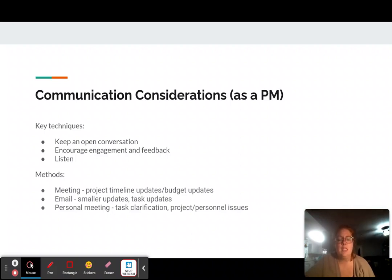Different methods we can use, keeping in mind what you're trying to communicate and what type of communication is necessary. So if we're talking about project timeline updates or budget updates, we might need to have a meeting. If we're talking about smaller updates or task updates, that might be an email. Or if we need task clarification or project personal issues, that might need to be a one-on-one conversation.